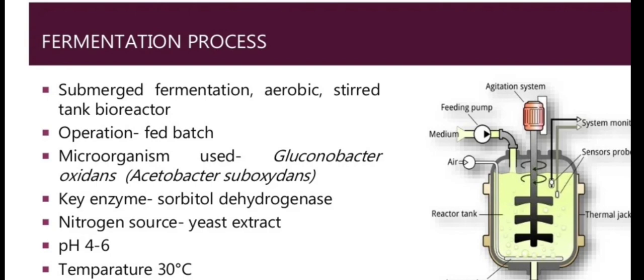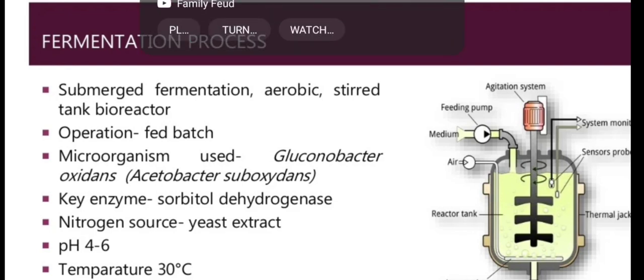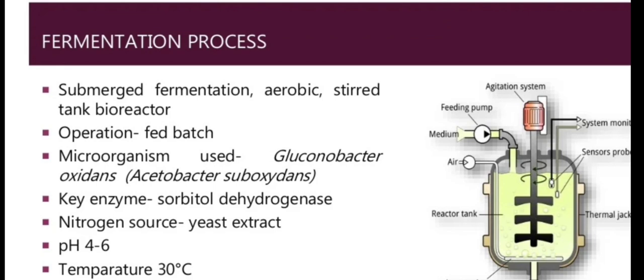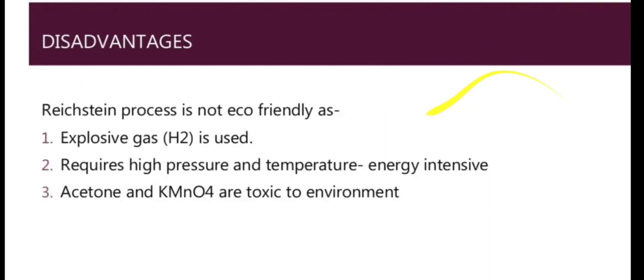For the fermentation process, it takes place in a bioreactor using microbes. If the organism is aerobic or a strict aerobe, we maintain aerobic conditions and provide oxygenated air pumped through. The operation is fed-batch, modified with feeding of nutrients at regular intervals to delay accumulation in the stationary phase. The key enzyme is sorbitol dehydrogenase and the nitrogen source used is yeast extract. The media must contain a carbon source, nitrogen source, and phosphorus or nutrient sources. The pH and temperature are as shown.